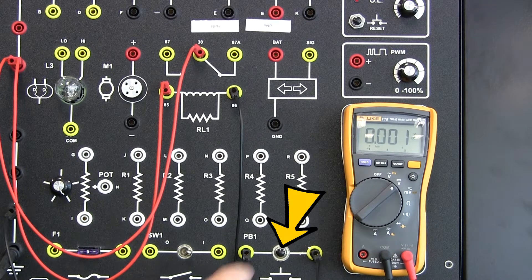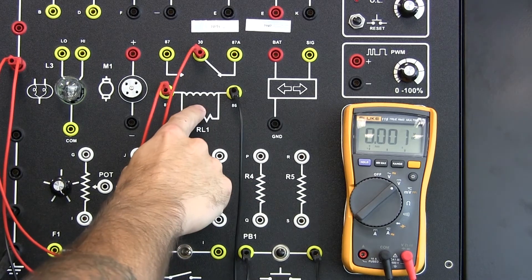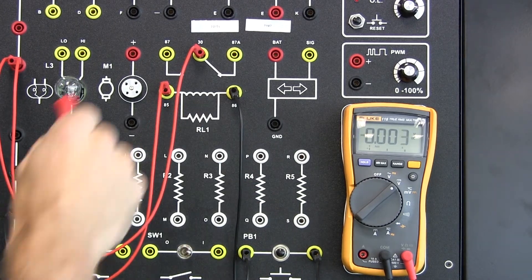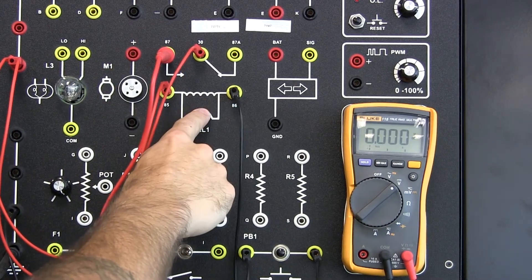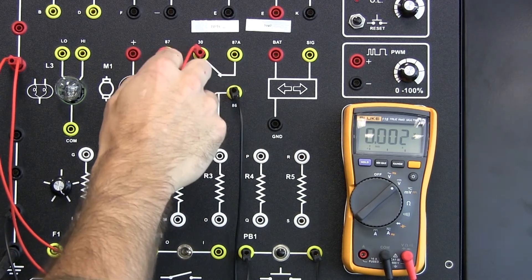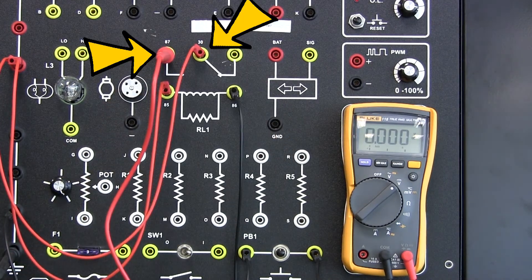In this example, I use a push button to control the electromagnet in the relay. When I push the button, it provides a ground to the electromagnet in the relay which should send voltage from pin 30 to pin 87.